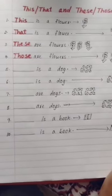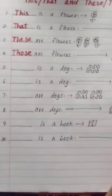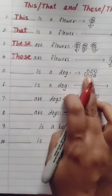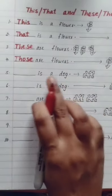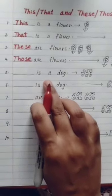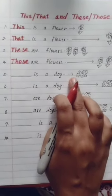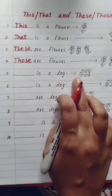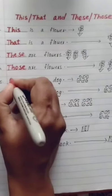Fifth example: blank is a dog. This dog is near. There is only one dog, so it is a singular noun. We have to use 'this' — this is a dog.